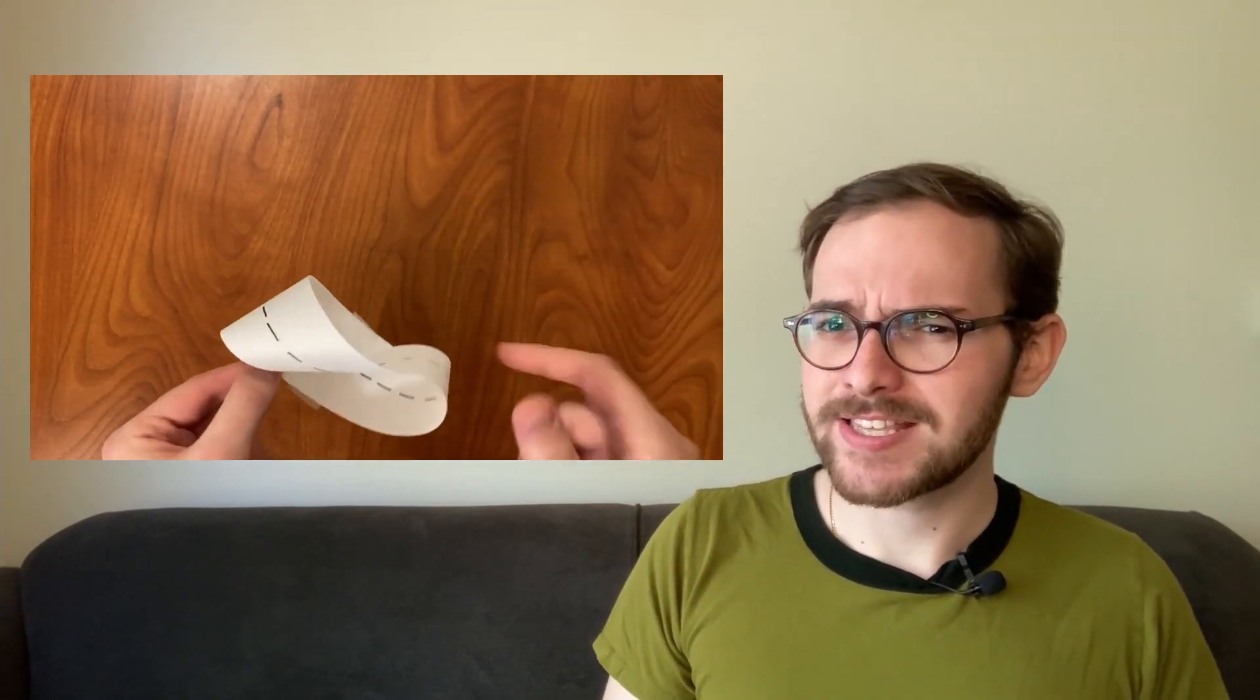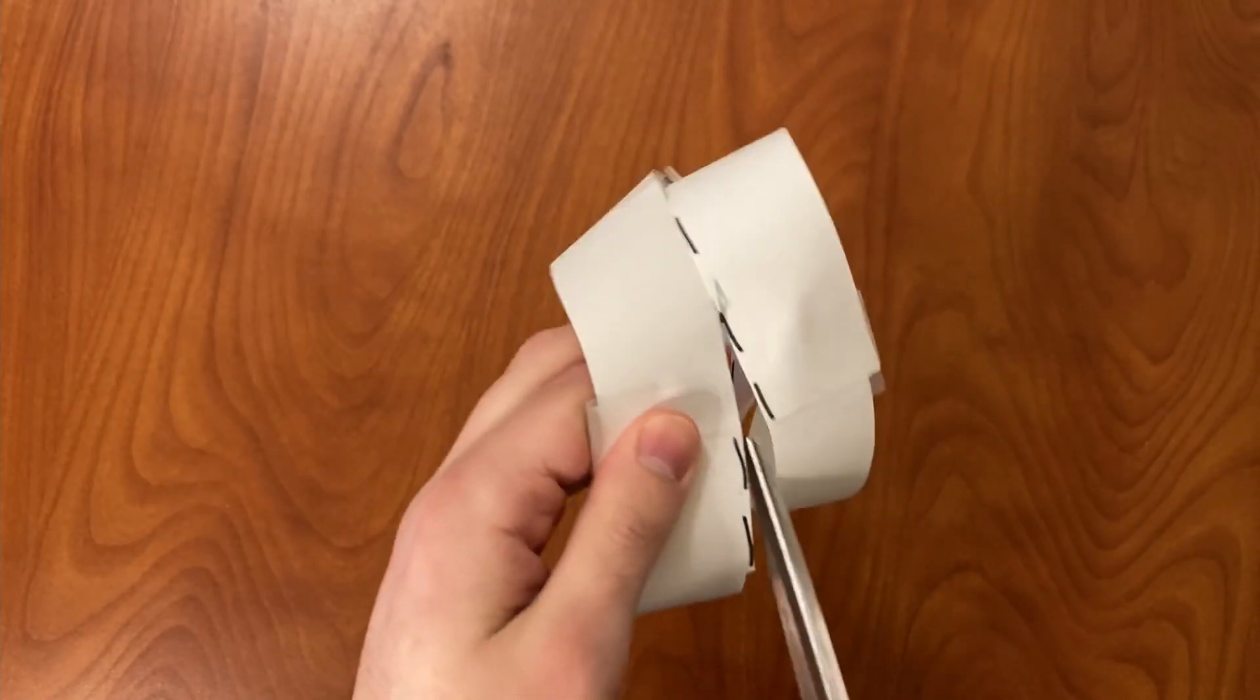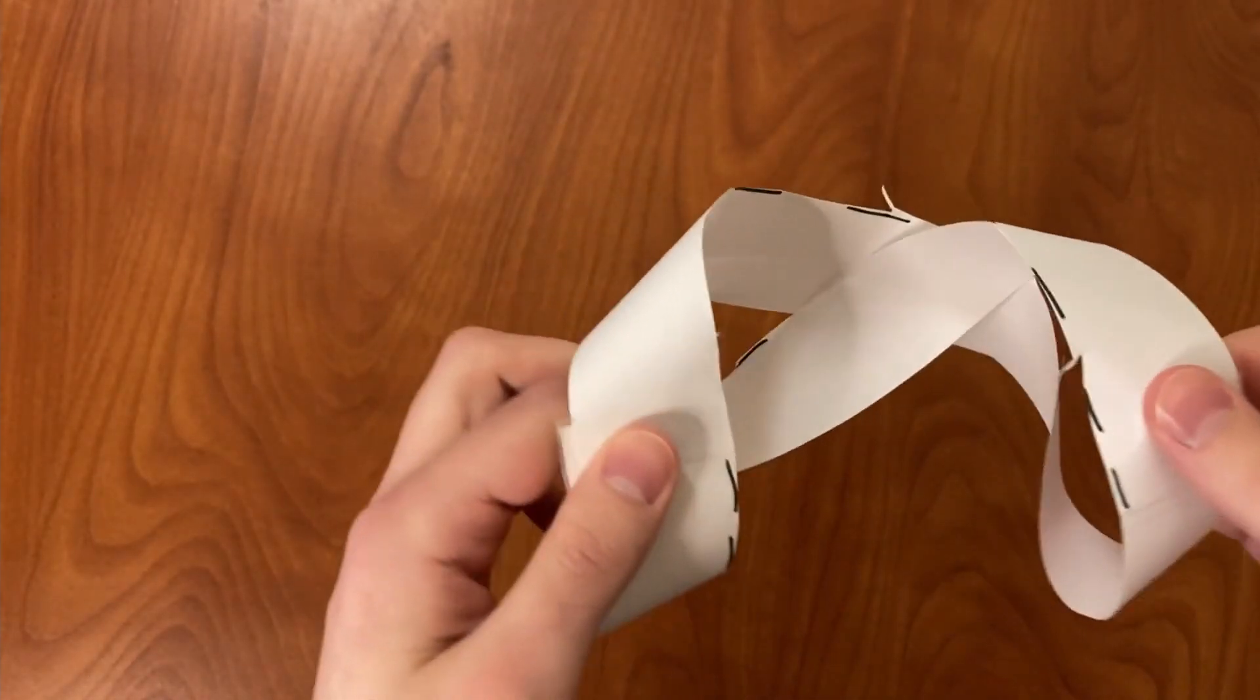One of the weirdest things about Mobius strips happens when you cut them down the middle. Instead of coming apart like you might expect, they stay together.